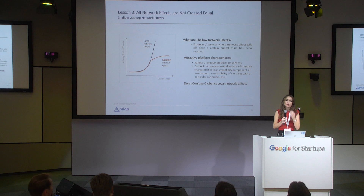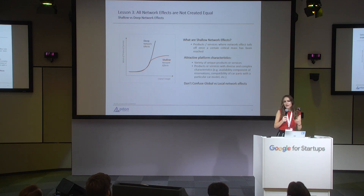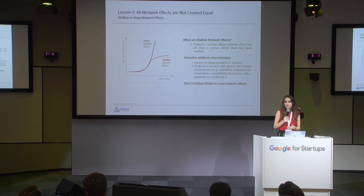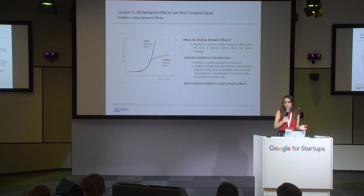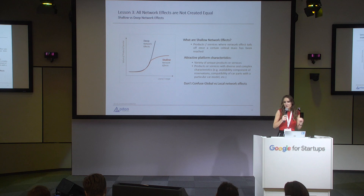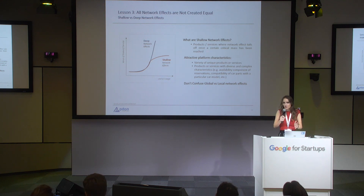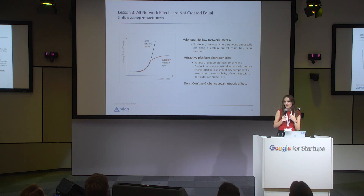Don't confuse local and global network effects. If I'm a person living in London who doesn't travel much, I don't really care about the amount of drivers and liquidity that Uber has in Birmingham, Germany, or even Warsaw. In fact, in a big city like London, I only care about a few areas — where I work, where I live, where I go out, and maybe one or two more. So from a user's point of view, my network effects in Uber are very, very local.